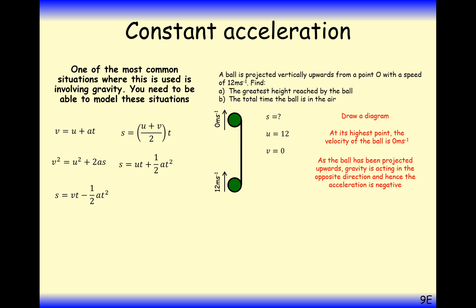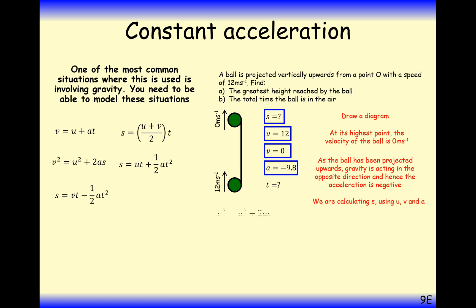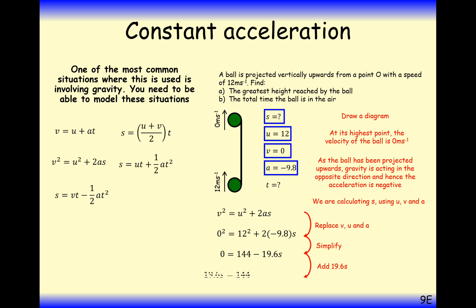S is unknown. U is 12. V, the final velocity, is zero. Given that we've set 12 as a positive direction going upwards, and gravity is acting downwards, A is minus 9.8. We don't know time either. Part A asks for the greatest height S, so we use V squared equals U squared plus 2AS, and rearranging gives a final answer of 7.4 metres.